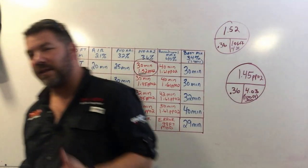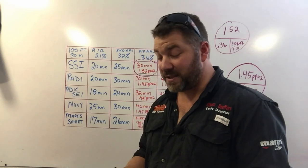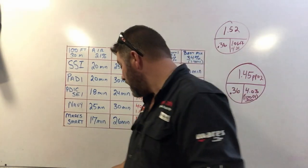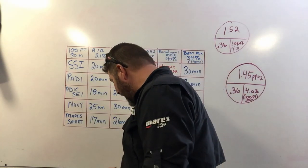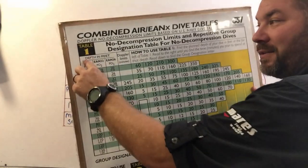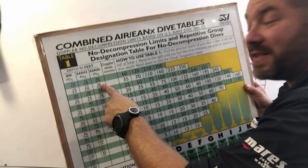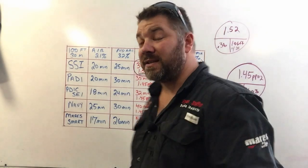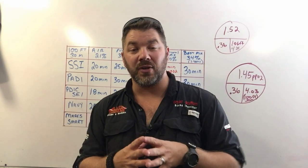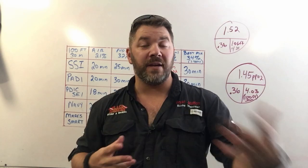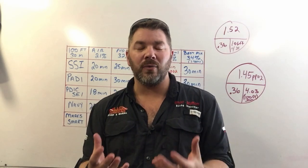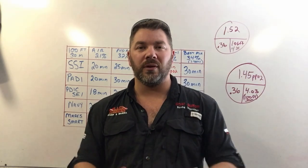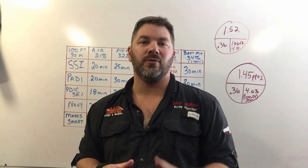I do want to take a second here and talk about using different sets of tables. We train through five different agencies. As you can see I've got a whole list of tables here. Most training agencies will have not only an air table, they'll also have at least two different types of nitrox tables. Even SSI has three different types of tables: an air table, a nitrox or NOAA-1 nitrox 32, and NOAA-2 nitrox 36. What if you're diving with a diver from a different training agency? How do we know which set of tables to use?